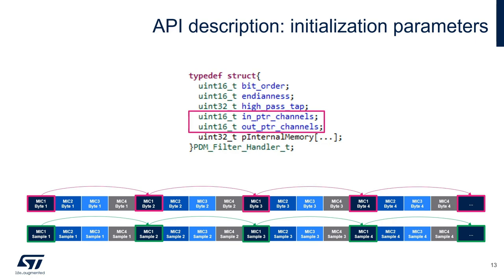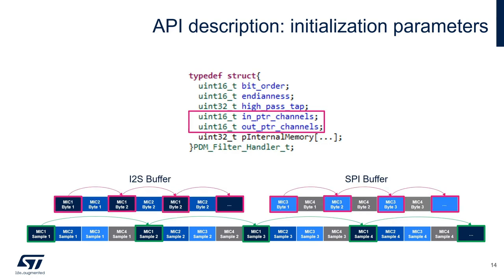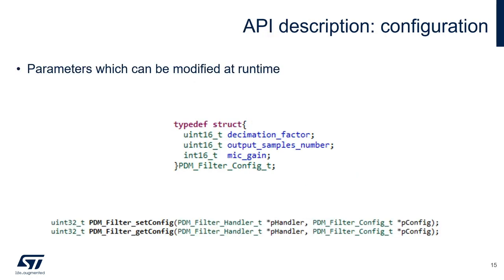This example shows the case when in pointer channels and out pointer channels are both equal to 4. Those two parameters are not necessarily equal. If you are acquiring microphones using several peripherals, like I2S and SPI, as we will see in the following videos, you may have PDM data into several different buffers. But when converting them, you may want to have all the output data into the same PCM buffer. In this example, you will set the in pointer channels equal to 2, while the output pointer channels will be equal to 4.